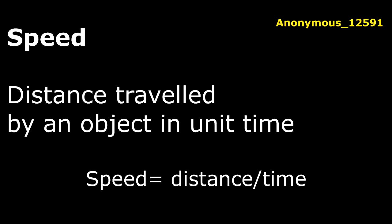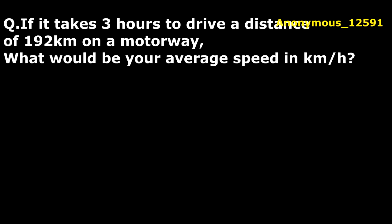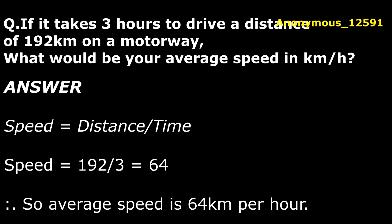Speed is nothing but distance traveled by an object in unit time. Speed's formula is speed equals distance by time. Let us solve some numericals about speed. The question is: if it takes 3 hours to drive a distance of 192 kilometers on a motorway, what would be your average speed in kilometers per hour? Average speed and speed are the same. So as we know, speed equals distance by time, so we apply that formula: 192 kilometers by 3 hours equals 64. So average speed is also 64 per hour.